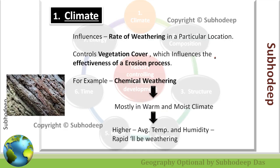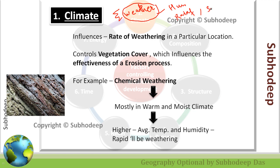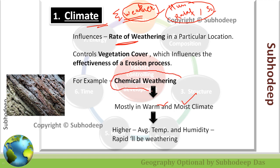The first factor is climate. How does climate affect landform development? Climate is a summation of the weather of a region, and weather is the summation of humidity, rainfall, solar intensity, degree of hotness, and degree of coolness. Climate ultimately affects the rate of weathering of a particular location. For example, if in a particular area there is a warm and moist climate, then in that kind of region chemical weathering will be more, and that's why the erosional process will also be more.